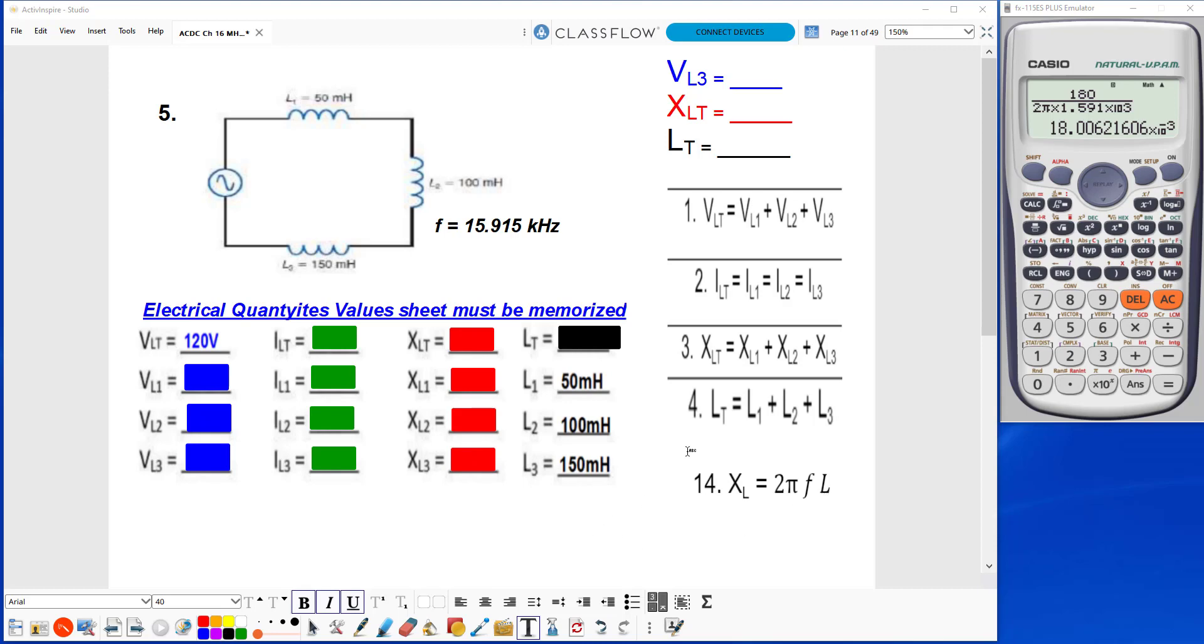But first, I'm going to find my total induction in this circuit using formula number 4. So I'll just add the 50, 100, and 150 millihenries together, which gives me 300 millihenries.